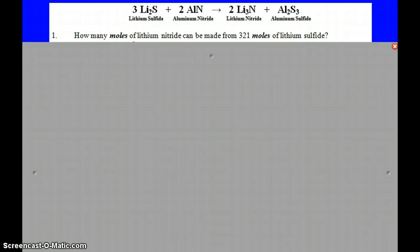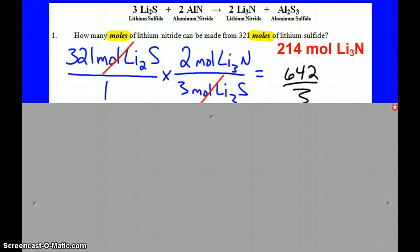Alright, so the first question here, how many moles of lithium nitride can be made from 321 moles of lithium sulfide? This is a mole-mole problem. The easiest way to tell is because we've got moles in there twice. So the only thing I need to solve this problem is a mole ratio. So my lithium sulfide, and then the ratio is 2 to 3. Lithium nitride on top because that's what I'm trying to find out about, lithium sulfide on the bottom because that's what I'm canceling out and changing.